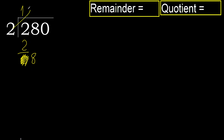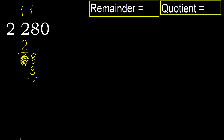2 multiplied by 5 is 10, which is greater. 2 multiplied by 4 is 8, it's not greater. Subtract — 8 minus 8 is 0. Next, eliminate the 0 on this side. Bring down 0.